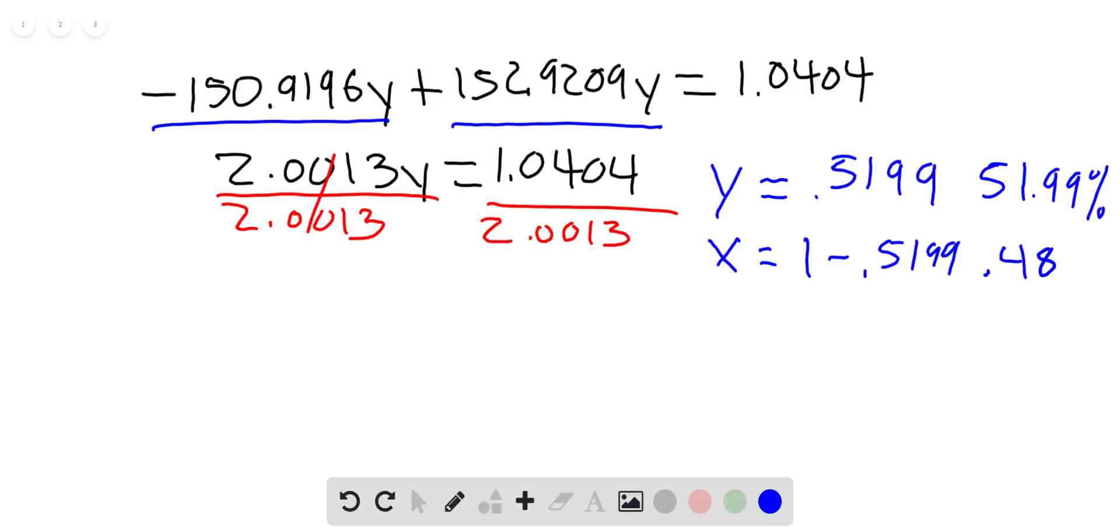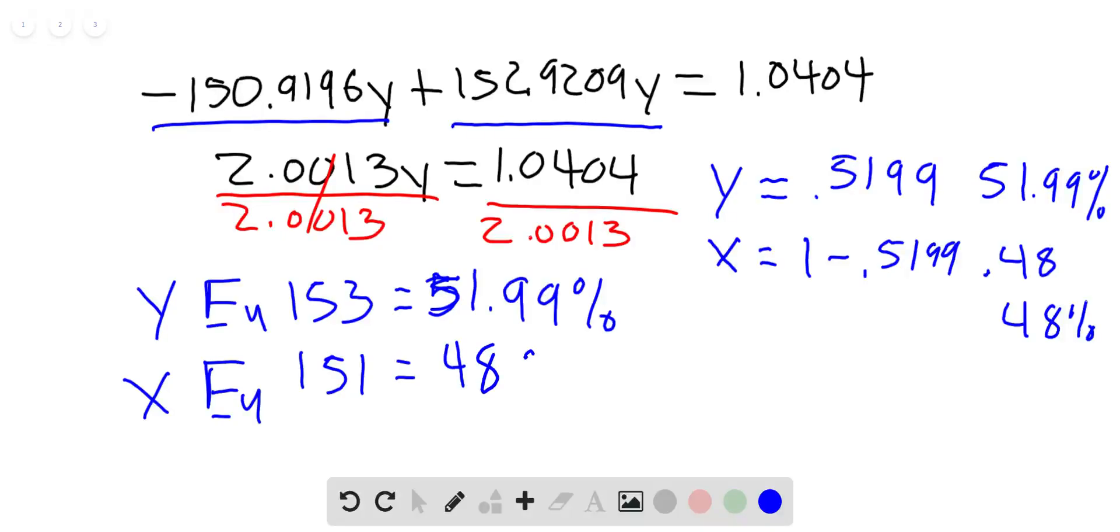So my y value, if I go back, my y was the 153, so y for Eu-153 equals 51.99%. And my x value for the Eu-151 equals 48%.